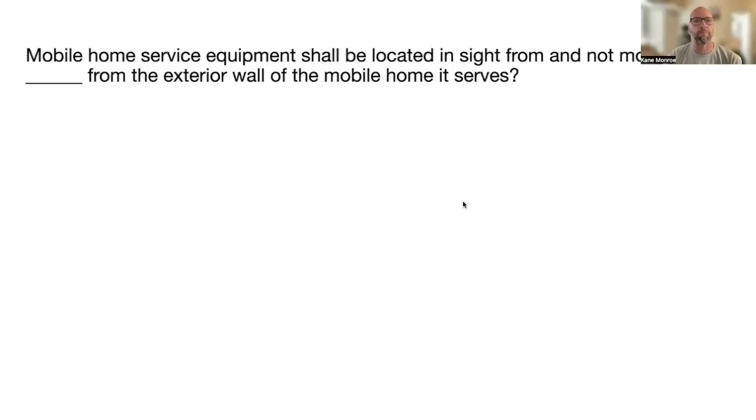Mobile home service equipment shall be located in sight from and not more than 30 feet from the exterior wall of the mobile home it serves. NEC 550.32(A).